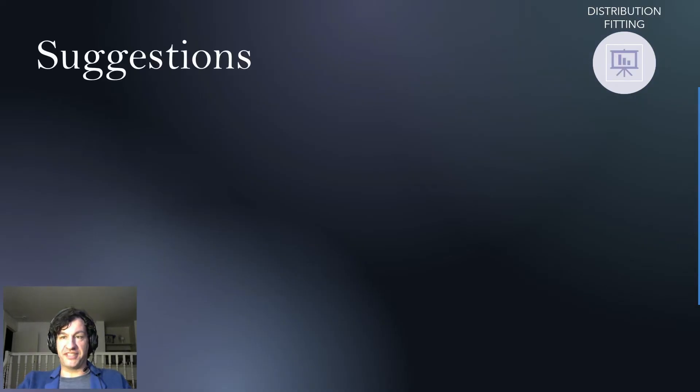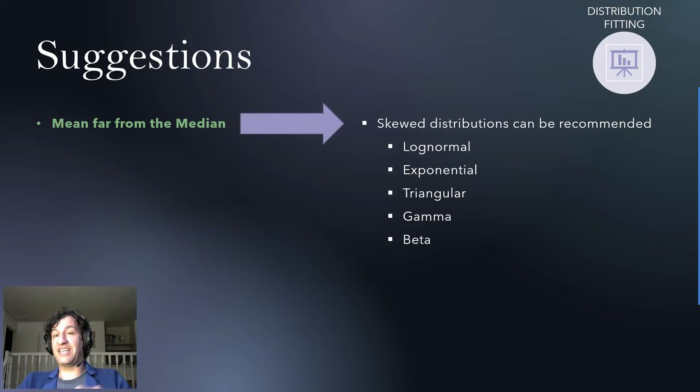Let's talk now about distribution fitting. We talk about suggestions here because we can only suggest distributions. Distribution fitting is a bit of an art. There's no button or unique algorithm that will tell you exactly, like pressing a button, what the distribution is based on any data that you might have. So, you need to do a lot of inference. So, let's talk about some elemental things. For example, what if the mean is far from the median? You will see immediately that the distribution is skewed. So, you want to use skewed distributions.